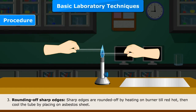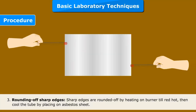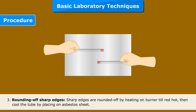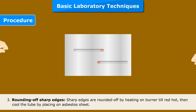Procedure 3: Rounding off sharp edges. Sharp edges are rounded off by heating on the burner till red hot. Then cool the tube by placing it on the asbestos sheet.